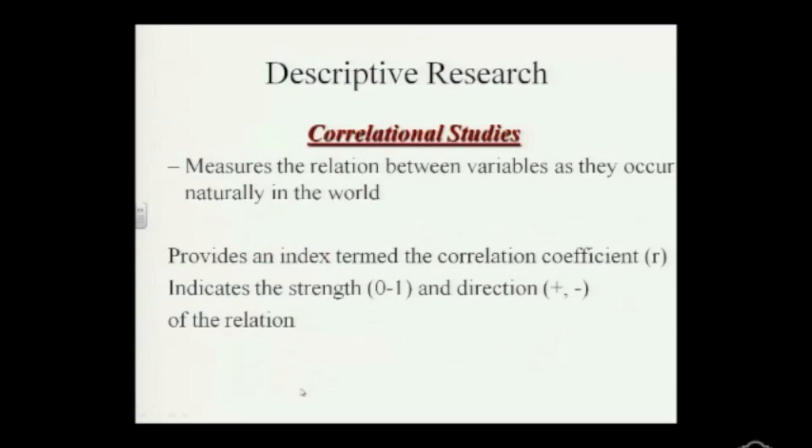As one variable increases, the other decreases? Exactly. So a negative correlation just means that the direction of the two variables is in the opposite direction. As one goes up, the other goes down. A positive correlation, they're moving in the same direction. They both go up or they both go down, right? So increased behavior, increased studying behavior, increased grades, a positive correlation. Give me an example of a negative correlation.